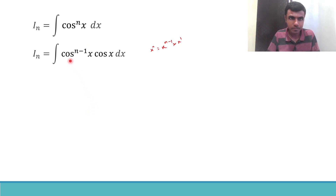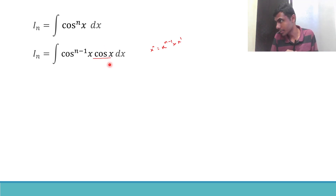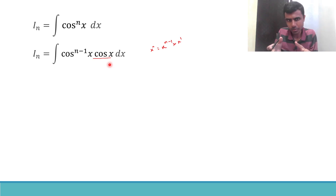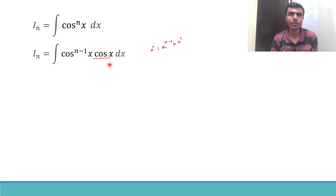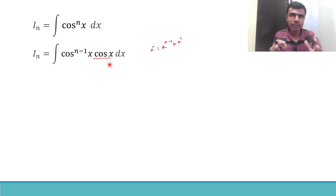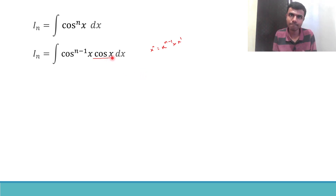Now, this cos x — I want to write it as the derivative of something. Here is my first question to the audience and to Krishna: whose derivative will give cos x? What function, when differentiated, gives cos x? Pause the video and put your answer in the comments box. Excellent — the derivative of sin x is cos x, so this cos x I can write as the derivative of sin x.